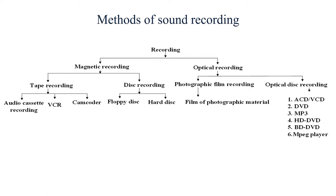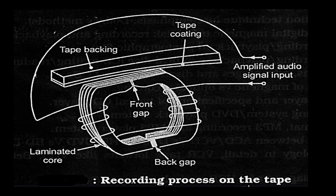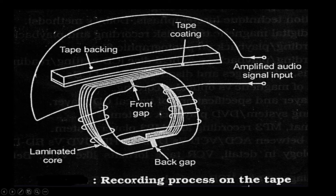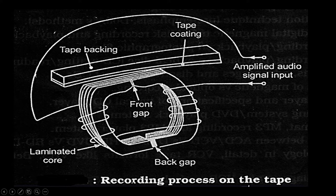In today's session we are going to talk about optical recording on the photographic film. But before that, we must understand how tape recording takes place in the magnetic process. There is a laminated core having a small gap called a back gap, wound with wire to which the amplified audio signal input is given. Whenever the amplified audio signal is applied to this laminated core, some magnetic energy gets developed.